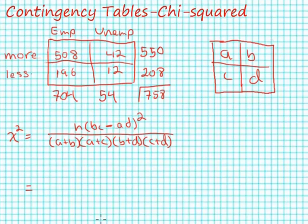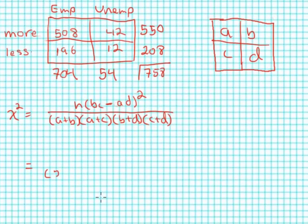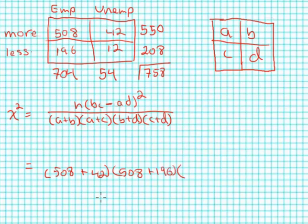I'll start with the denominator: 508 plus 42 times 508 plus 196 times 42 plus 12 times 196 plus 12.